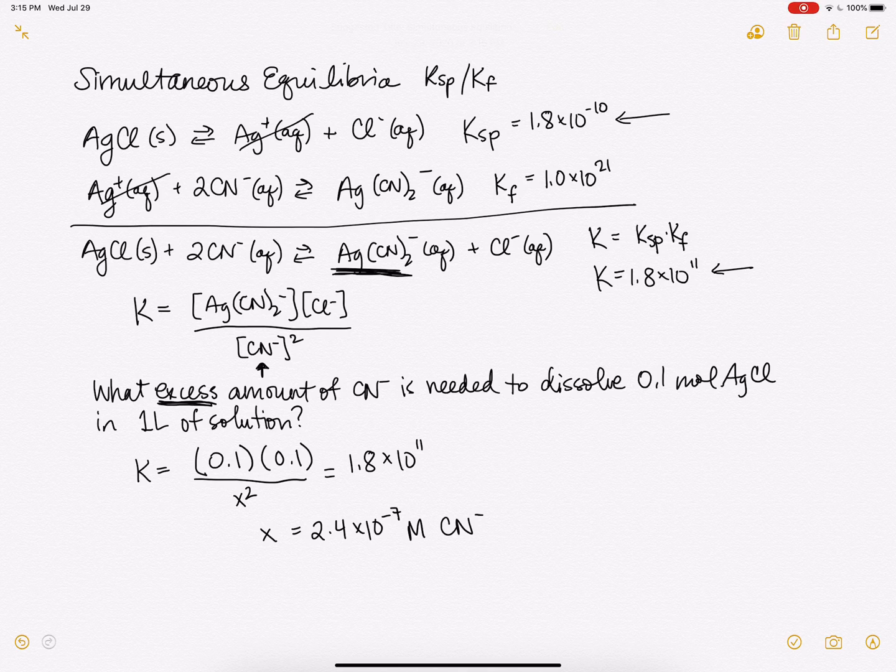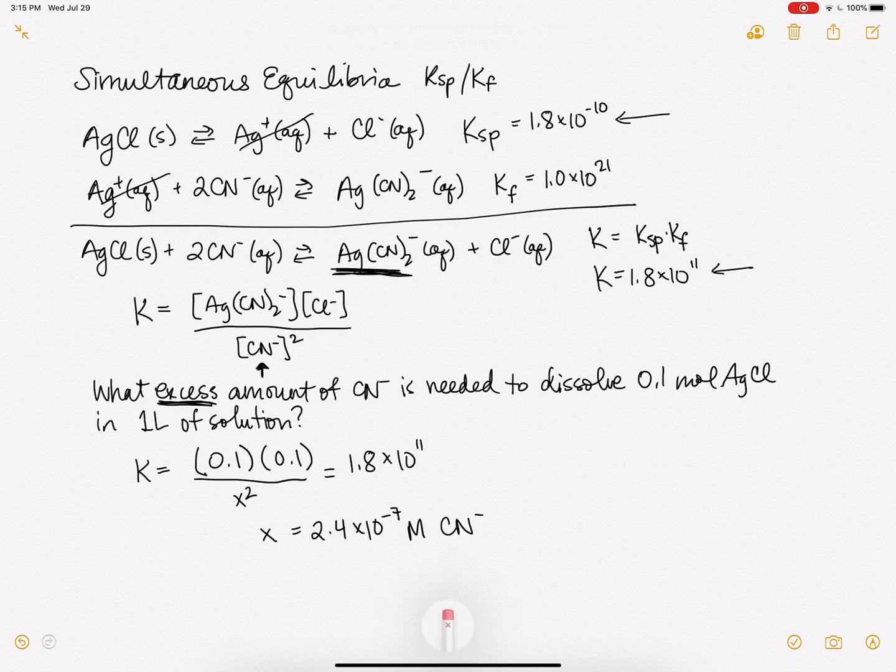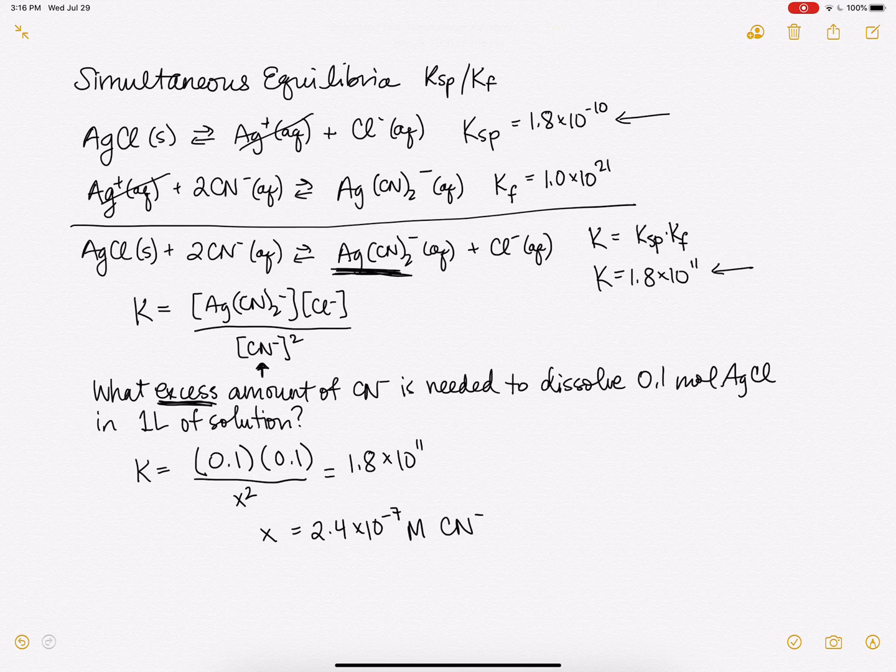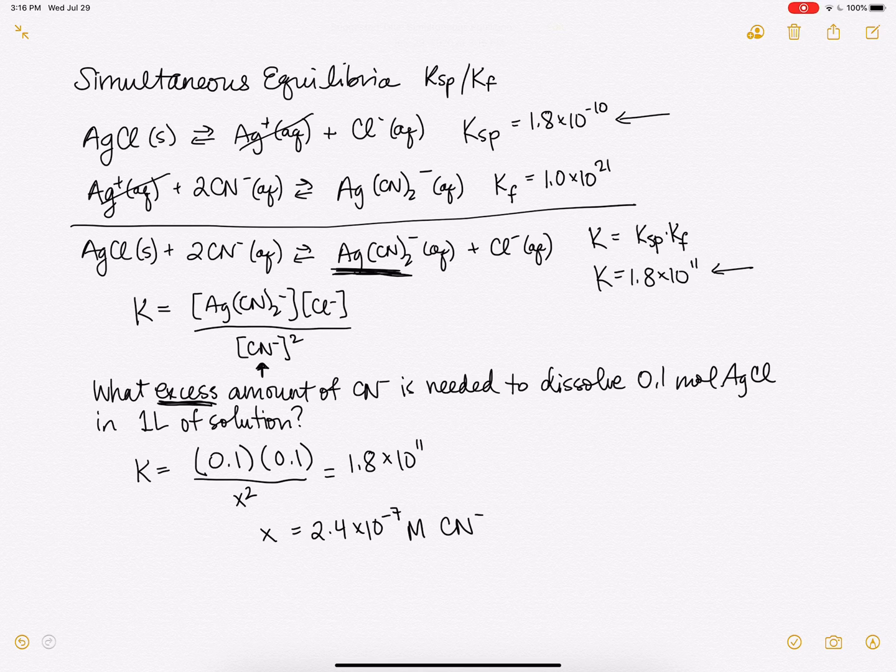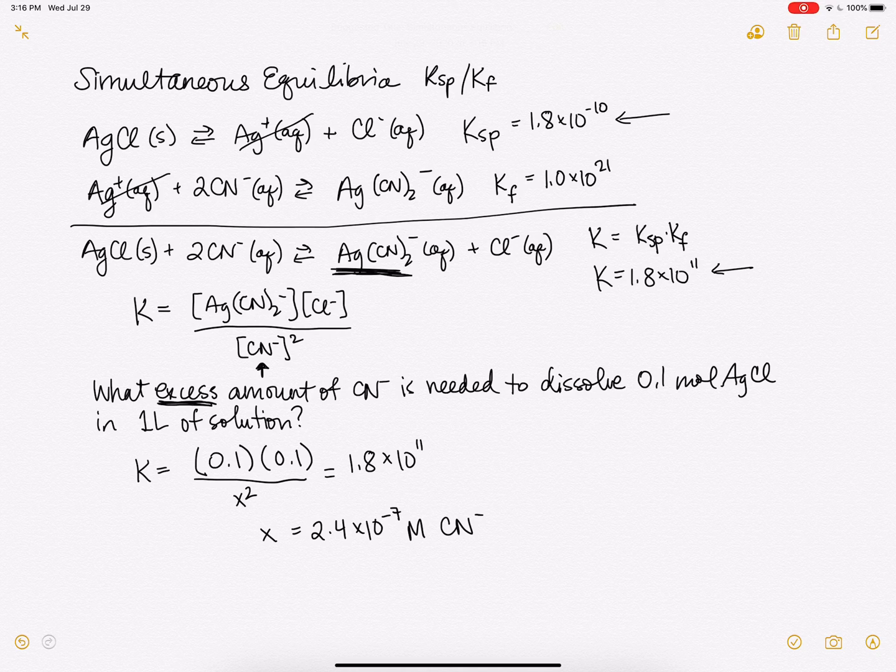As you can see, it's a very small amount of excess cyanide, and that is good because we don't want to have to use any more than is absolutely necessary. So this is an example again of a simultaneous equilibrium. Essentially the same rules apply that we have been using whenever we combine reactions. If we are adding them together, we're going to multiply the k's. So that's how we got our new k value here.